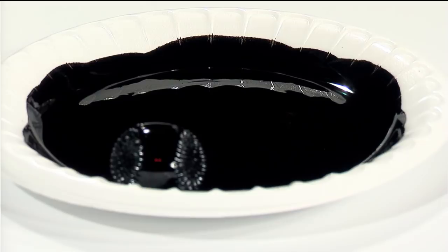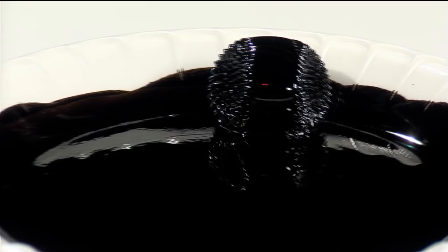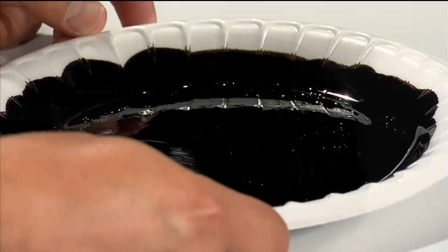Ferrofluid is basically thousands of tiny iron particles floating around in oil. Those particles line up with points where the magnetic field is strong and attempt to fully align with the field itself. When that happens, we see spikes because the surface tension from the oil puts a limit on how far they can go.